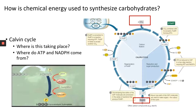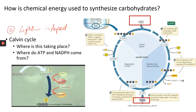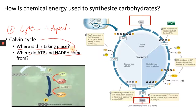Now we talk about the second step of photosynthesis — the light-independent reaction, also known as the Calvin cycle. This takes place in the stroma — outside the thylakoid but inside the chloroplast. The ATP and NADPH required for this cycle come from the previous step, the light-dependent reactions.